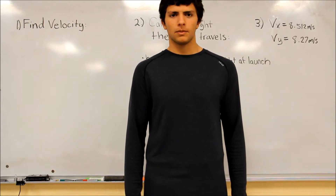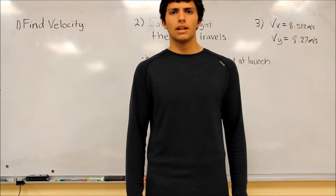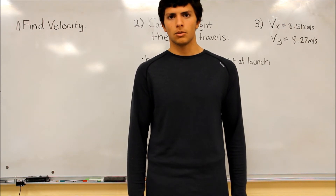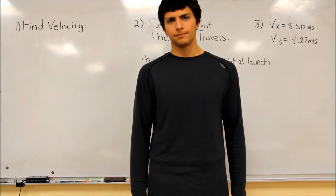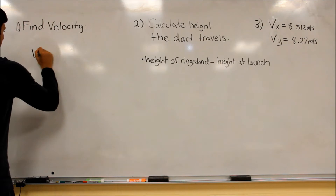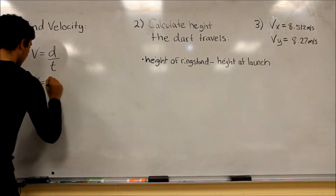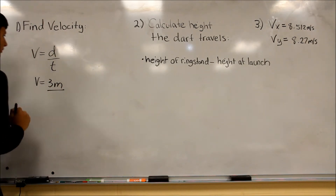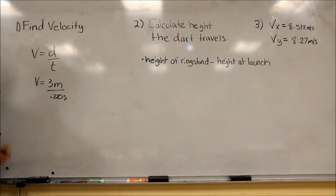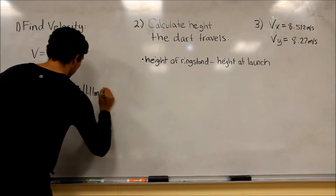There are no major plots to be used in this lab. The only considerable data collection will be finding the trials of time in order to calculate your velocity. However, there is a lot of data manipulation. We will now calculate the velocity using the formula V equals D over T. We plug in D, which is 3 meters, and our average time, which is 0.270 seconds. Once calculated, the velocity equals 11.11 meters per second.